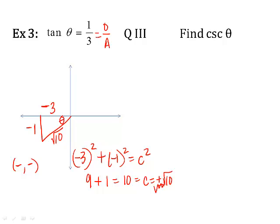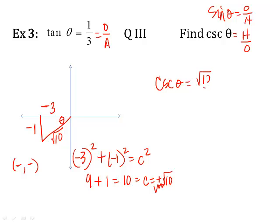Now I know all three sides. What is cosecant? Cosecant is the reciprocal of sine, and sine is opposite over hypotenuse, so if I flip it over I get hypotenuse over the opposite side. The cosecant of theta is the hypotenuse, which we found is the square root of ten, over the opposite side, which was negative one. So you could write this as negative square root of ten. Hope this makes sense. We'll do some more examples when you get to class.